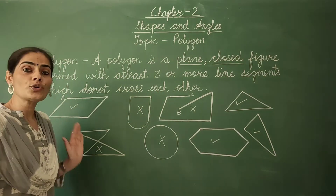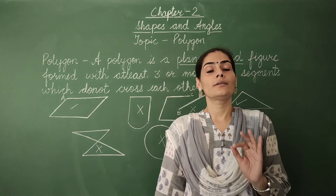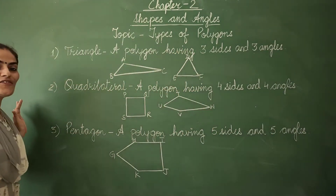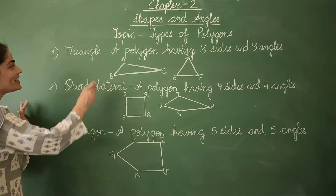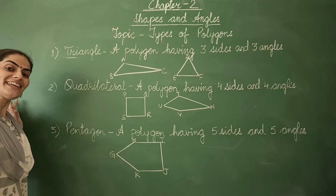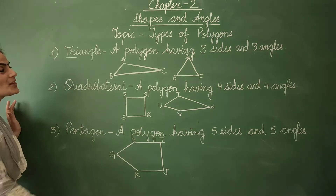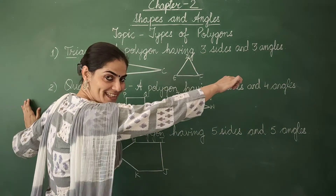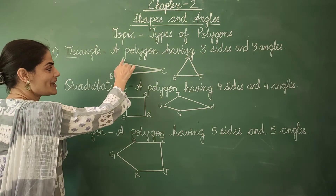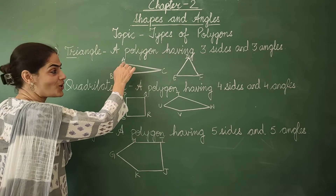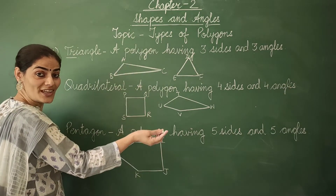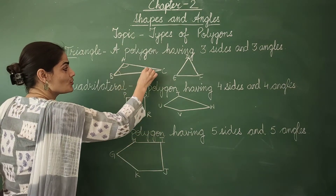I hope now you have understood the meaning of a polygon. Now we move to the different types of polygon. The first type of polygon is a triangle. The name itself tells you — tri means three. A polygon having three sides and three angles is called a triangle. Look at this figure A, B, C — it has three sides and three angles.